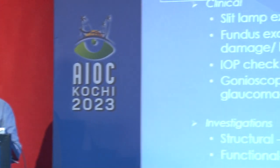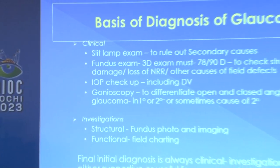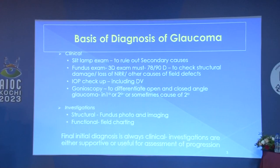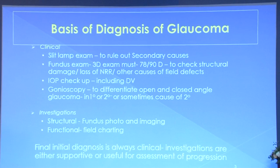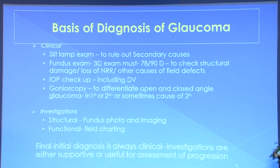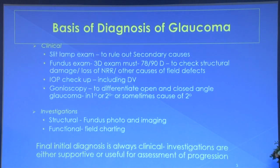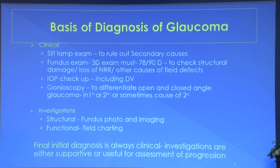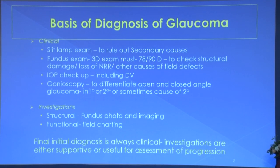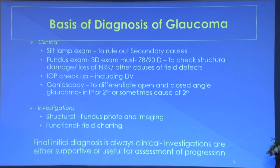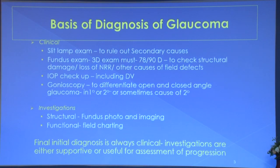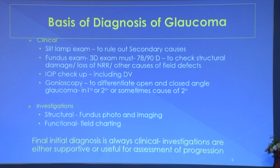We will cover intraocular pressure, angle evaluation, disc evaluation, and perimetry - because OCT is covered in the next talk. The diagnosis of glaucoma is basically clinical with slit lamp examination, used to rule out secondary glaucomas, and fundus examination which has to be 3D without any doubt. Intraocular pressure is the first and foremost requirement, and gonioscopy differentiates between angle closure and open angle, and sometimes finds the cause of secondary glaucoma.